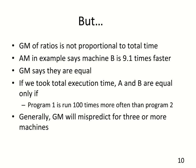However, geometric means have their own challenges. The geometric mean of ratios is not proportional in any way to total execution time. For example, the arithmetic mean says B is 9.1 times faster, but the geometric mean says they are equal. A and B would be equal only if program 1 is run about 100 times more frequently than program 2 — information we don't really have. In general, geometric mean is a poor predictor of actual execution time, especially when comparing three or more machines.